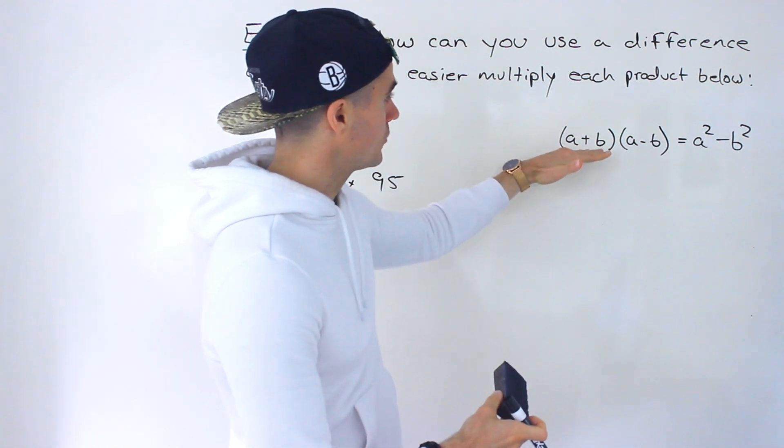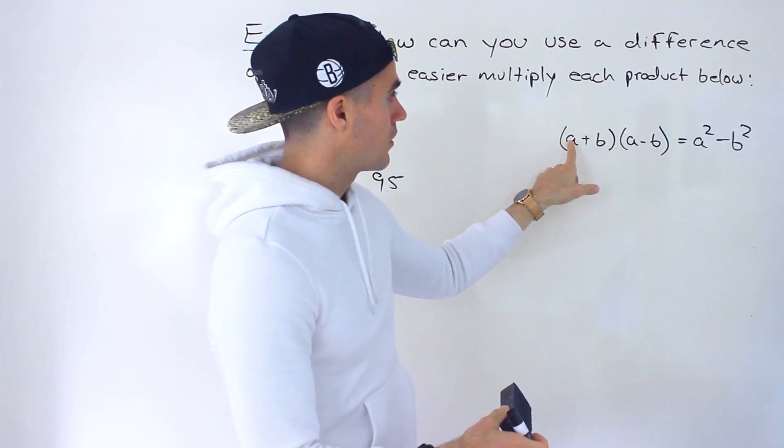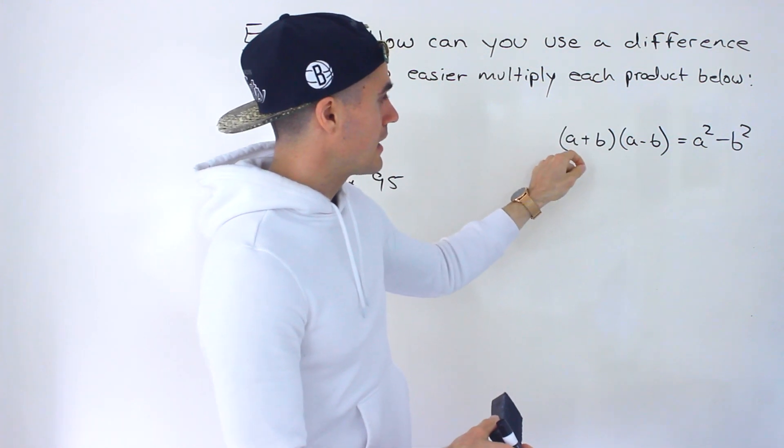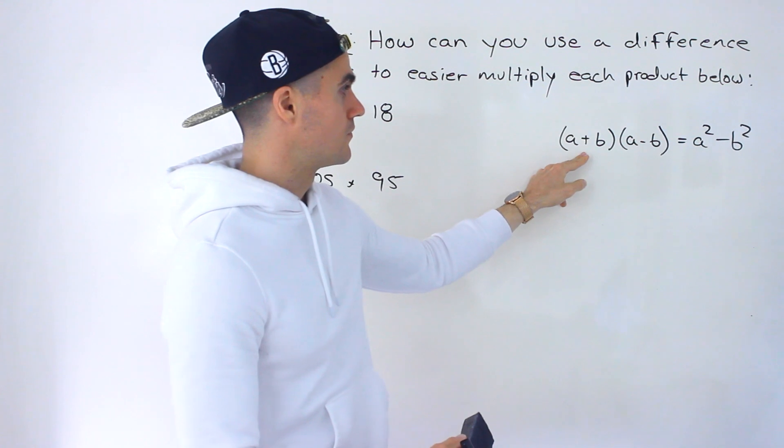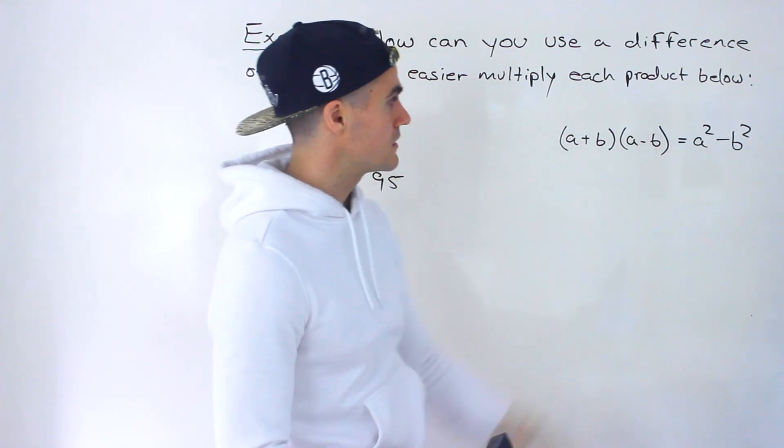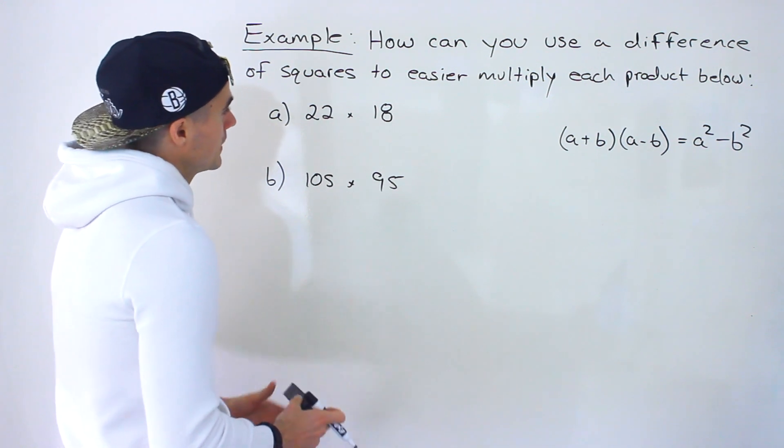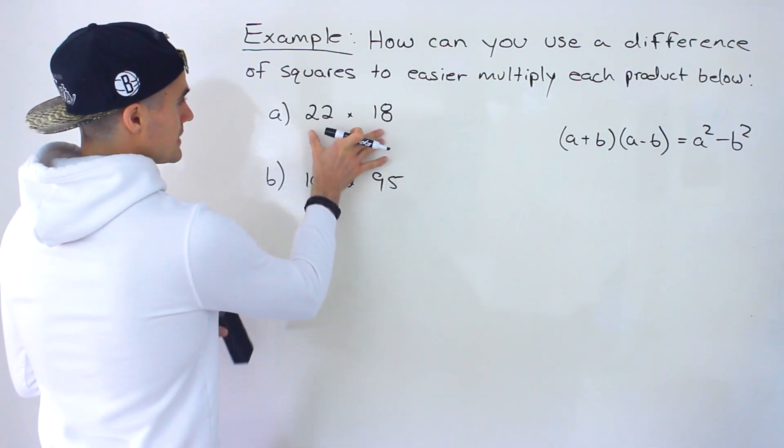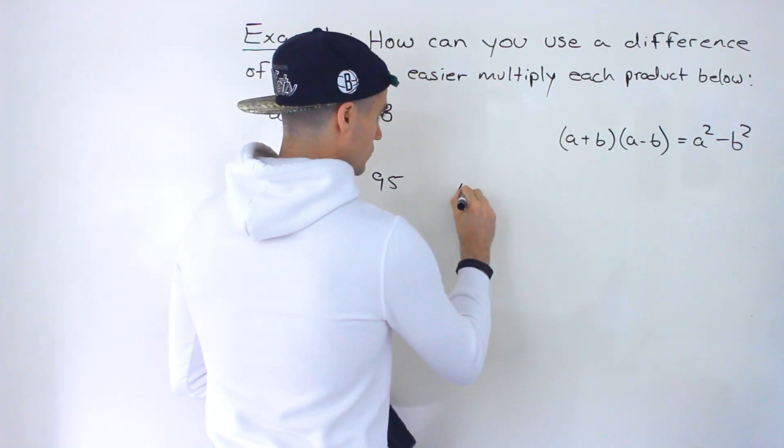When you're basically multiplying two things where the binomial is the same except for the sign in the middle, and then that simplifies to this over here. So with these kinds of questions what you want to do is you want to try to take these products. So let me write the first one over here.